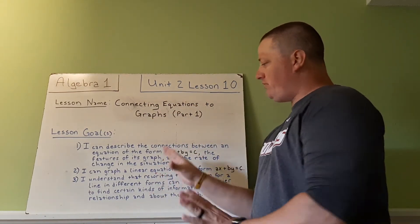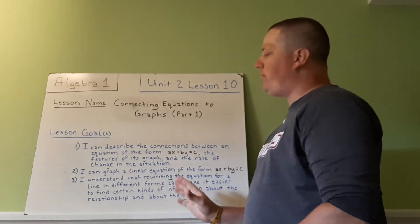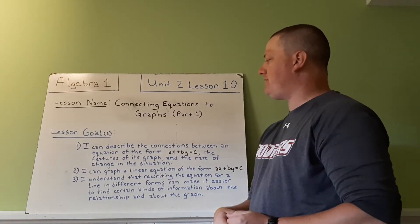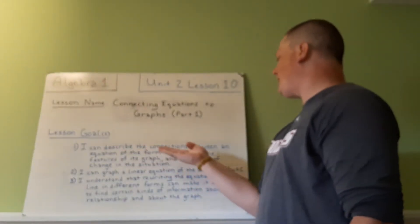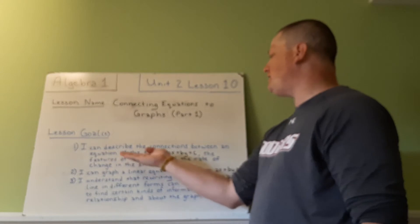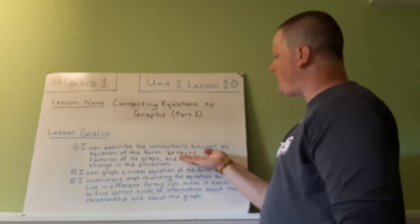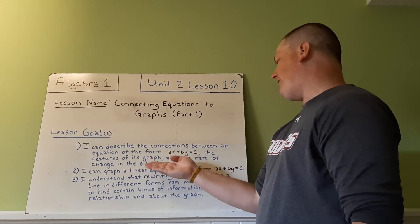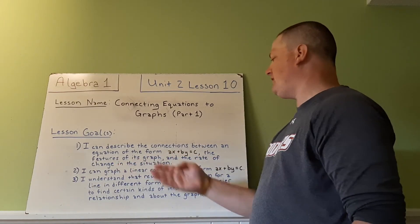If you need to, these are longer goals. Please pause if necessary to get them written down, but I'm going to go through them and explain. I can describe the connections between an equation of the form ax plus by equals c, the features of its graph, and the rate of change in the situation.